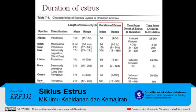Table 7.1 shows some characteristics associated with the estrous cycles in domestic species. I want to focus your attention on the column shown in red. Note that the time a female exhibits estrus differs among species. Alpacas, for example, will display estrus from anywhere between 4 to 5 days. A cow, however, will only display estrus anywhere from 6 to 24 hours. And a mare will display estrus for anywhere between 2 to 12 days.